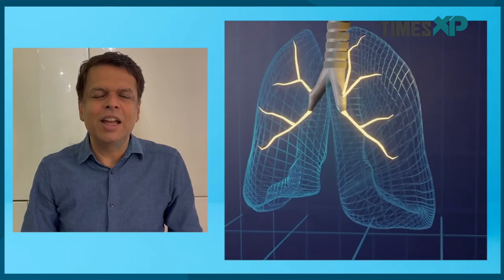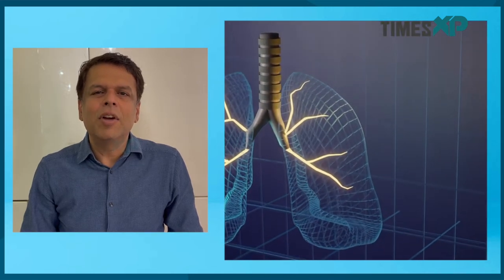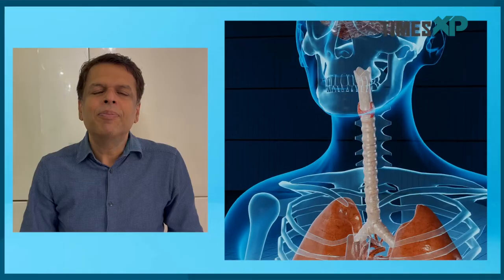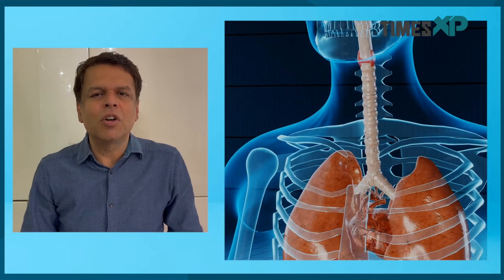The lungs can be broadly divided into two parts: the airways which carry the air into the lungs, and the alveoli where the actual exchange of gases takes place — where oxygen crosses over into the blood to purify it and carbon dioxide crosses over from the impure blood into the lungs to be expelled during expiration. The disease which affects this process is called COPD.